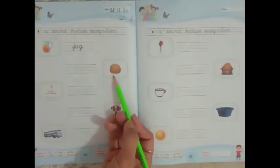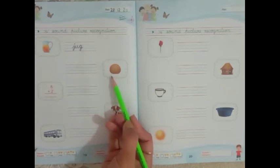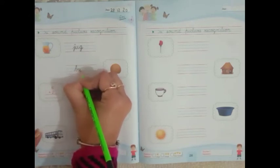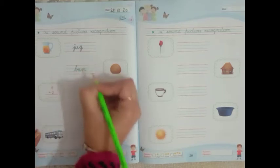Now look at the second picture. This is a bun. B-U-N. So I am going to write B-U-N. Bun.